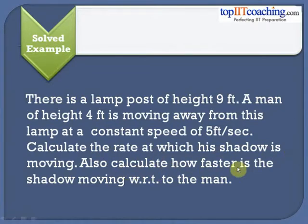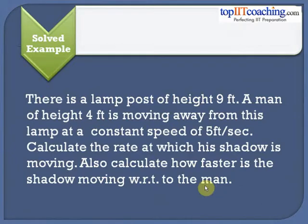Also calculate how much faster the shadow is moving with respect to the man. In this problem we have been given that there is a lamp post of height 9 feet, a man of height 4 feet, and he is moving away from the lamp post at a constant speed of 5 feet per second. There is a lamp post so it will make a shadow of this man, and we have to calculate the rate at which his shadow is moving.